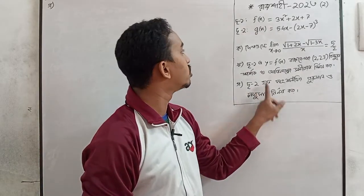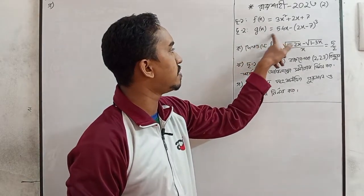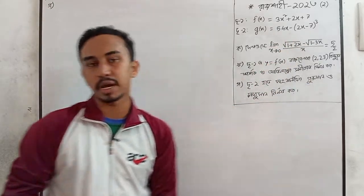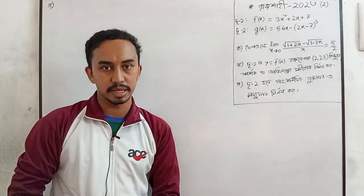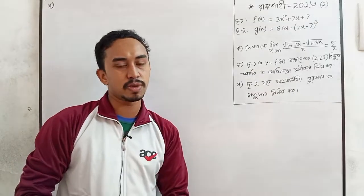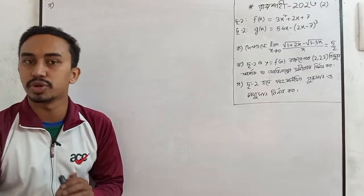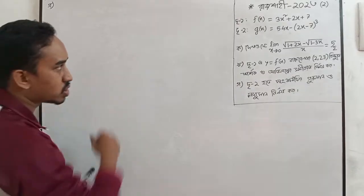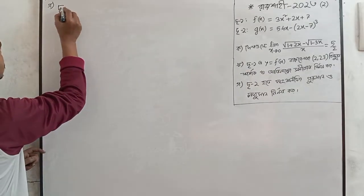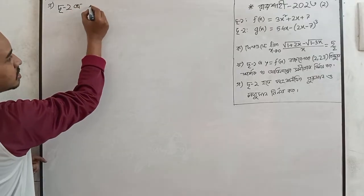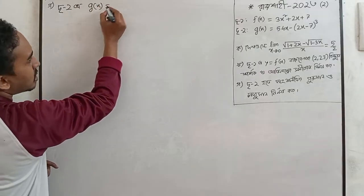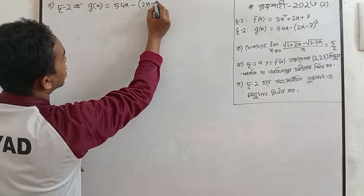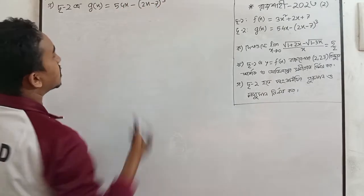Some questions are being mentioned; question 2 is non-dimensional. We know the zero of the function. The question is to solve again. Question 2: z of x equals x squared minus 2x minus 7 to the power of 3.